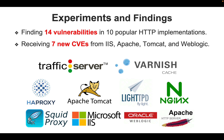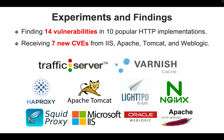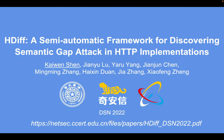In total, we found 14 vulnerabilities and 7 new CVEs in 10 popular HTTP implementations. For more details, please join our talk at DSN 2022 or read our paper.